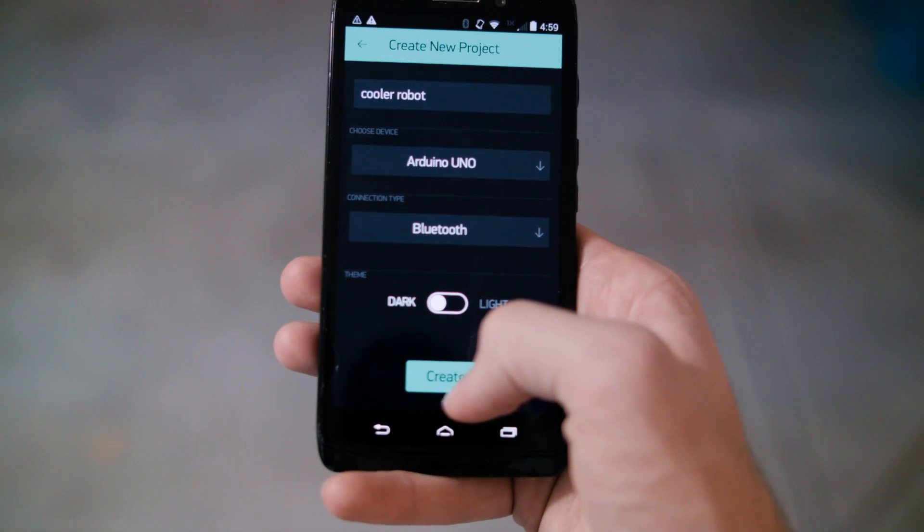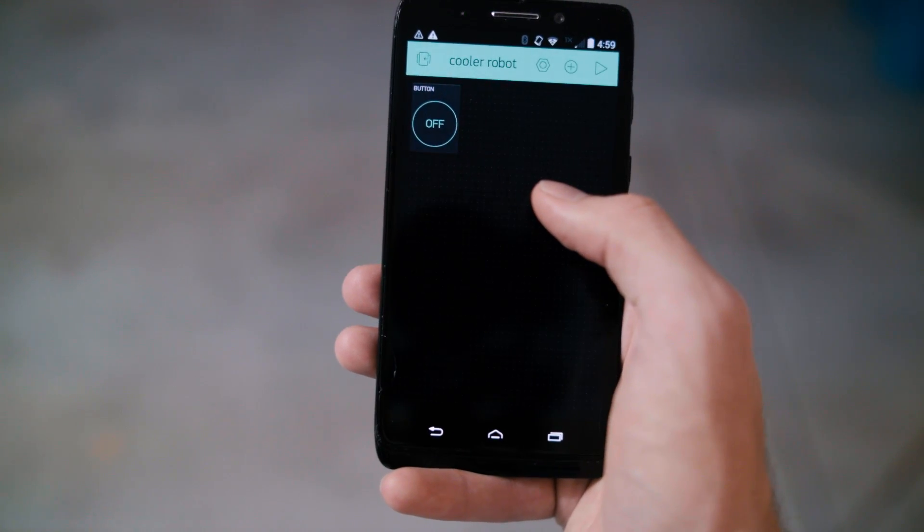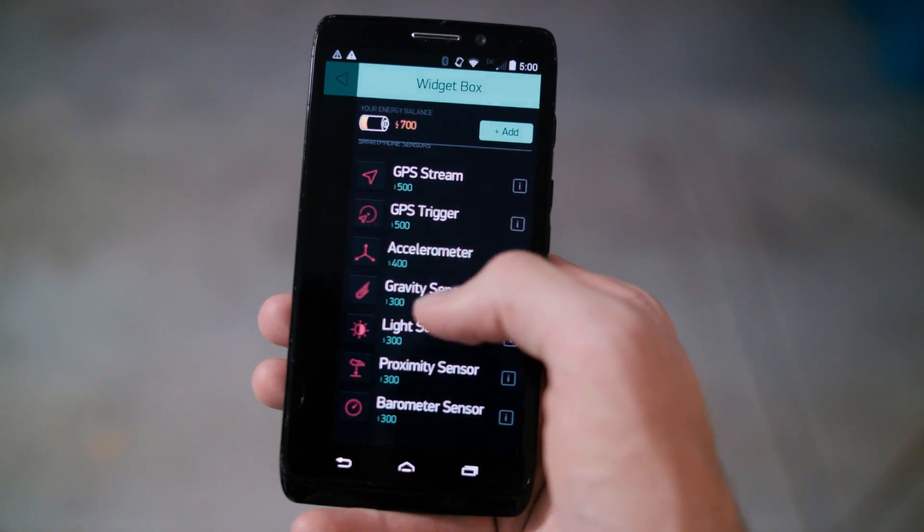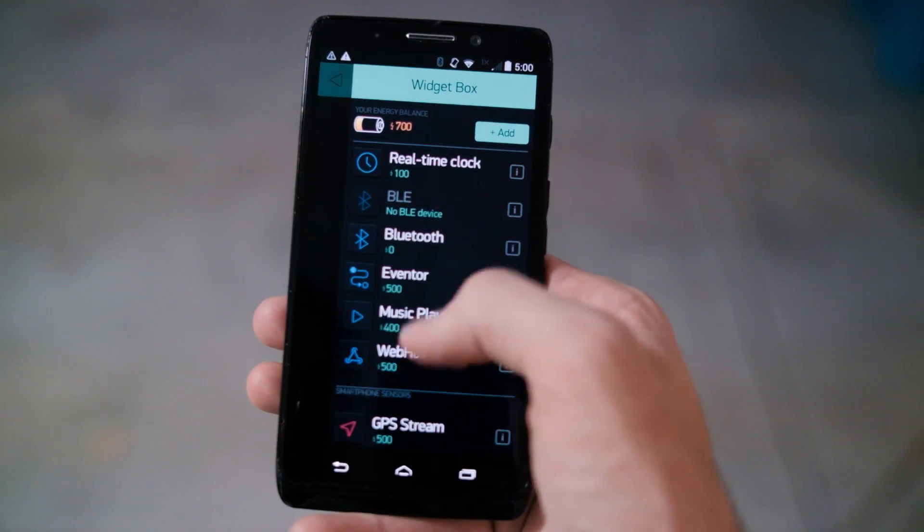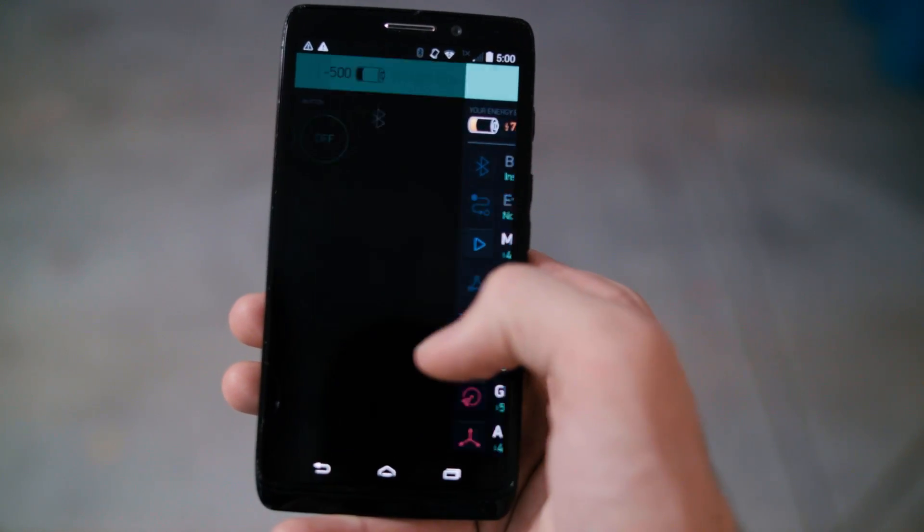And then for your connection, obviously you want to use Bluetooth for that. I had a couple different buttons here which I use for various things including an enable switch. Then the more important features are the Bluetooth module and the GPS streaming module.